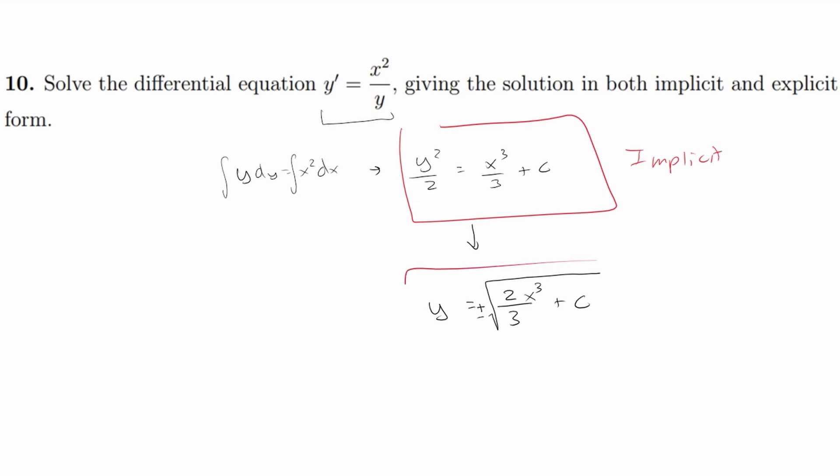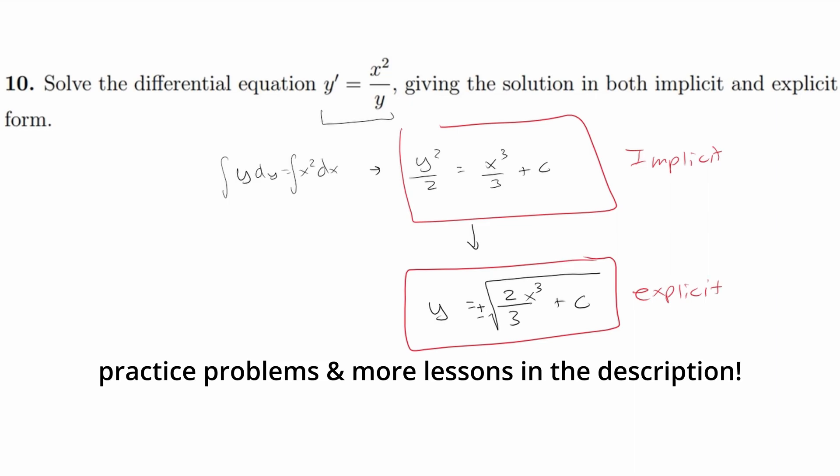And this is going to be our explicit form. So again, the implicit is just a basic solution and the explicit is y by itself, and it's super clean overall.